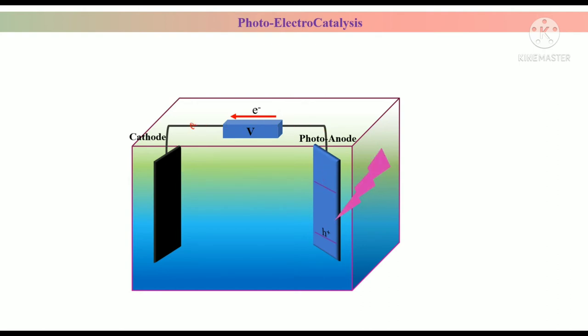Where these electrons participate in several reduction reactions like oxygen reduction reaction or hydrogen evolution reaction. Simultaneously, the holes that are present in the valence band of the anode can participate in several kinds of oxidation reactions like oxygen evolution from water splitting and hydroxyl radical generation.